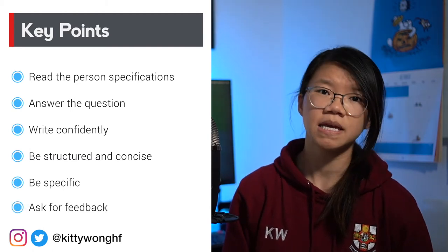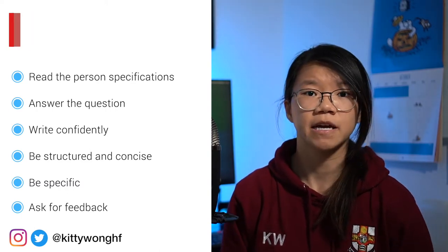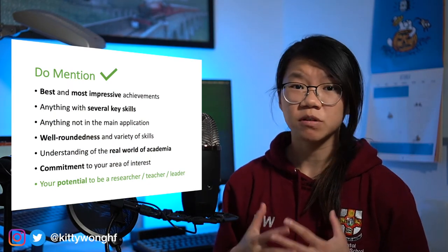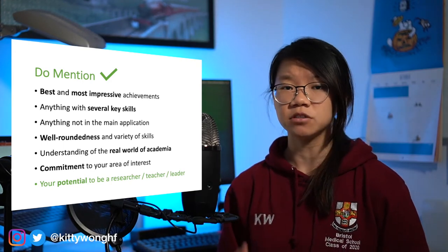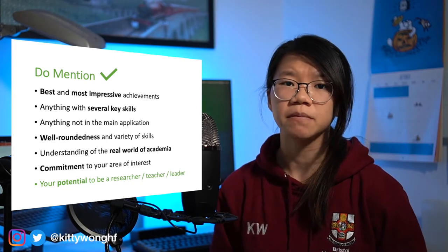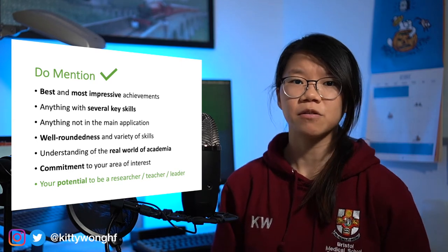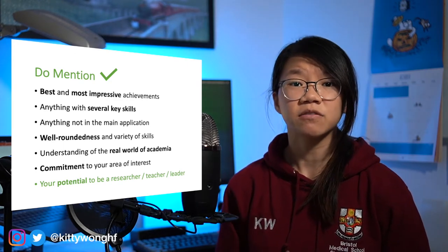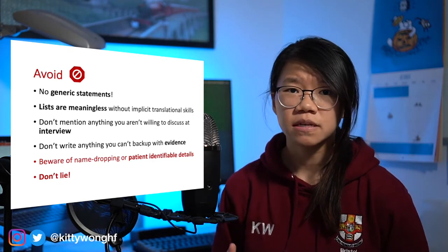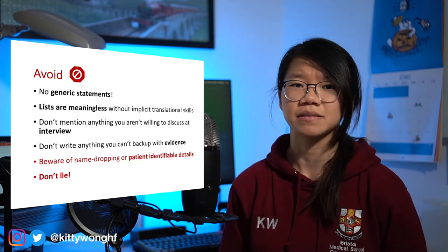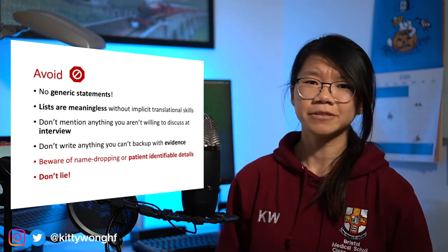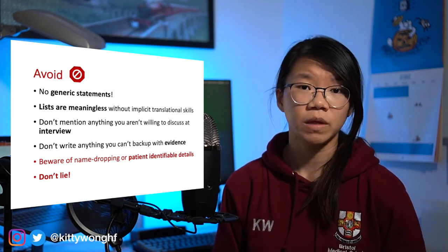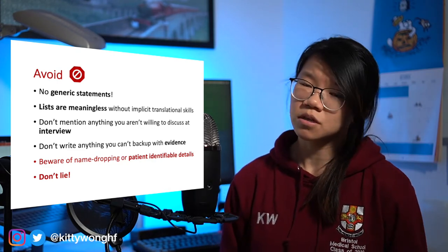Write confidently and be proud of your achievements. Each white space question is only 200 words long, so write in a way that is structured and concise. Be as personal and specific as possible, and avoid generic statements that can apply to anyone else. Most importantly, ask for feedback from as many people as you can. The key things to get across are your best and most important achievements, anything with key skills not listed in your main application — such as an impressive audit — and put yourself forth as a well-rounded candidate with commitment to your specialty, potential to be a good researcher, educator and leader, and an understanding of the real world of academia.